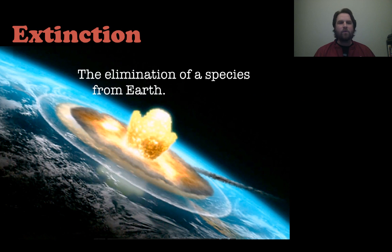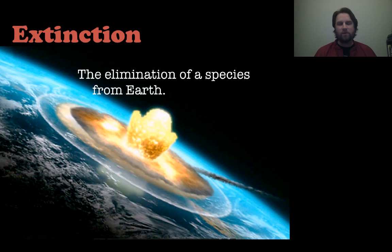Another evolutionary pattern is extinction — the elimination of a species from Earth entirely. This can happen because of a disaster, or if the species is simply no longer fit for the environment and cannot survive to reproduce.